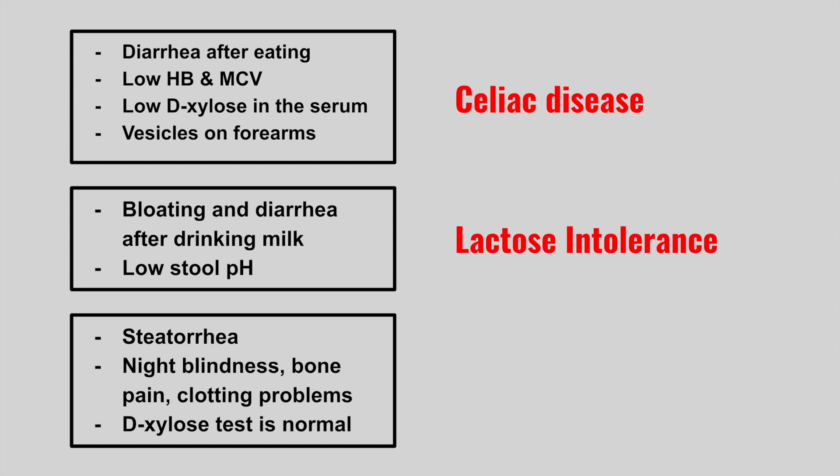The next patient has steatorrhea, night blindness, bone pain, and clotting problems with a normal D-xylose test. This is pancreatic insufficiency. This tends to happen in patients with chronic pancreatitis or cystic fibrosis when the pancreas isn't working properly and you have fat malabsorption. Remember the vitamin A, D, E, and K deficiencies — night blindness from vitamin A, bone pain and fractures from vitamin D, and clotting problems from vitamin K deficiency.